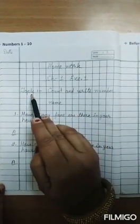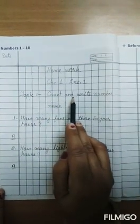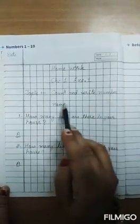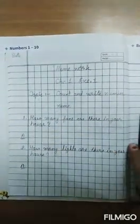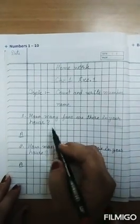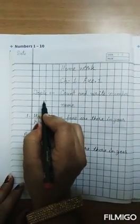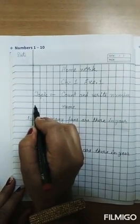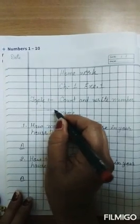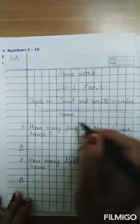Again leave a line. Topic: count and write numbers name. Underline the topic. Underline the topic with red pencil.